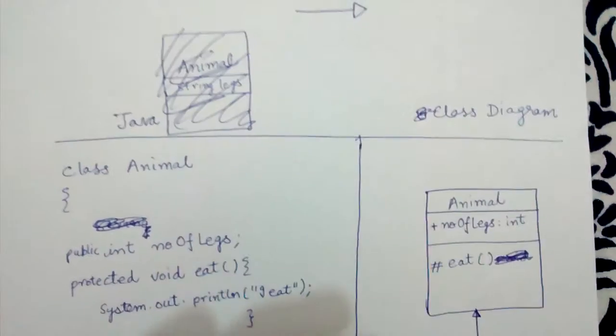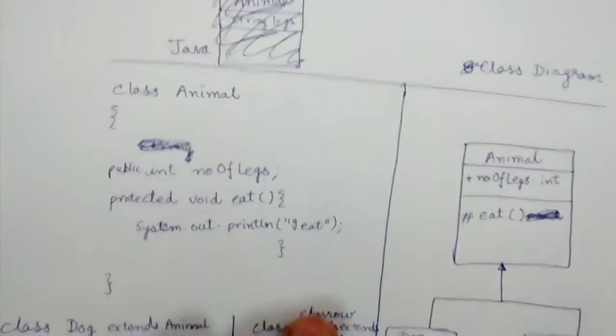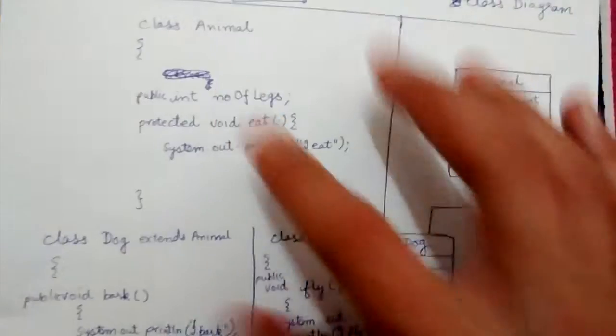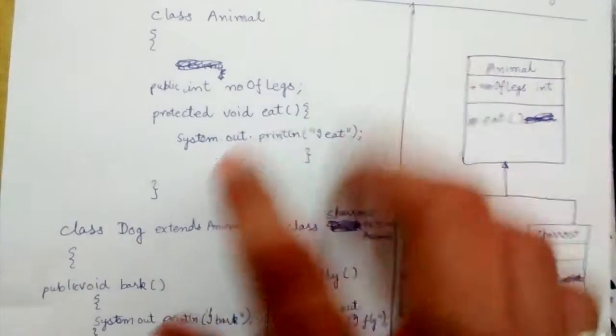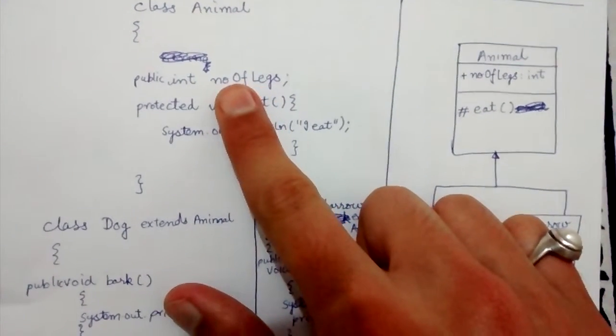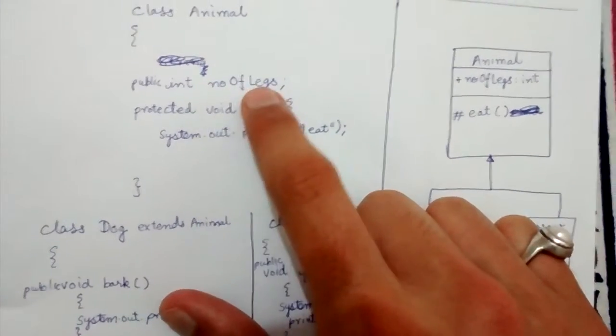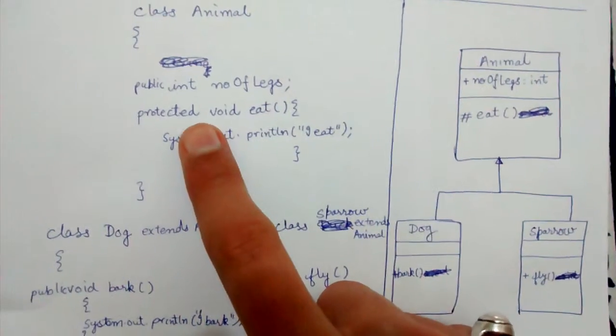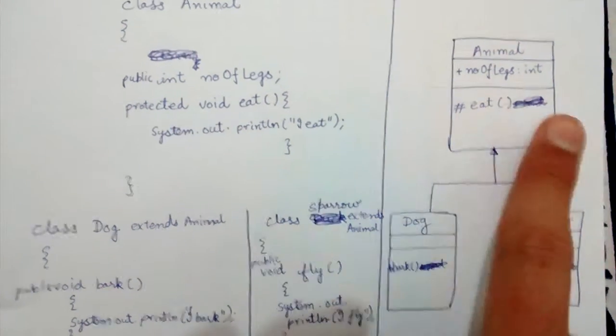Let's see an example with Java code. We have a class Animal with a public variable called numberOfLegs, which we represent here, and a protected method eat, which we represent here.